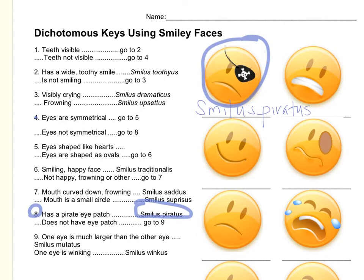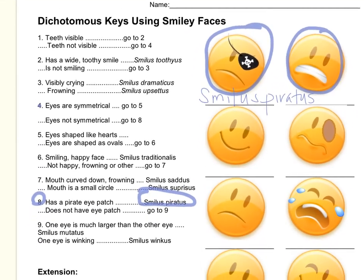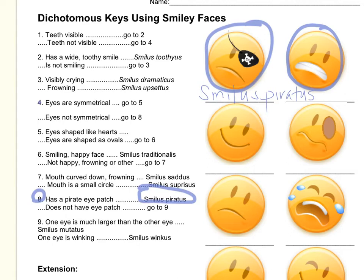Now we're going to do this guy. Teeth visible — go to two. Has a wide toothy smile? I wouldn't call that a smile, but he's the only one that has a lot of teeth. Let's try that one. So let's say he is Smilus toothyus. Smilus toothyus — that's for this guy.